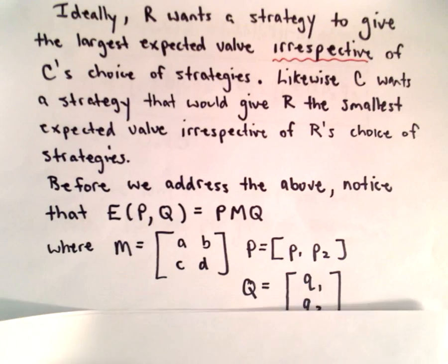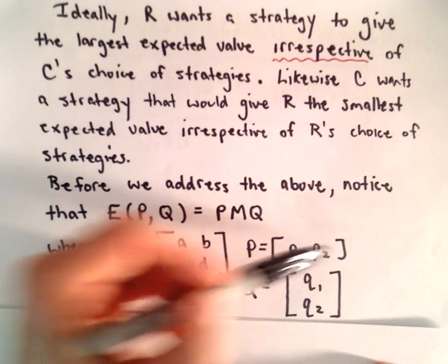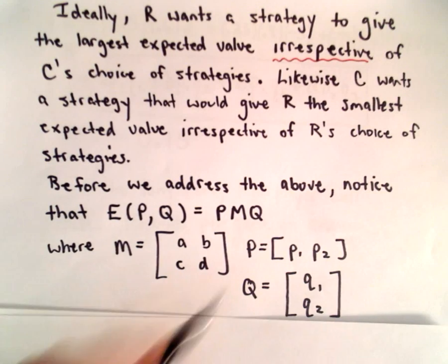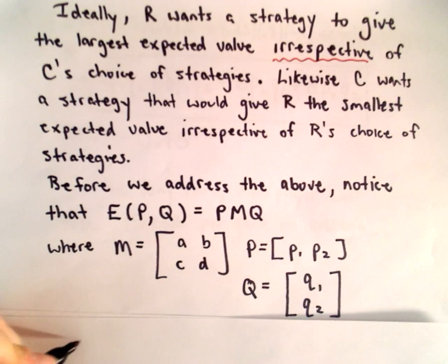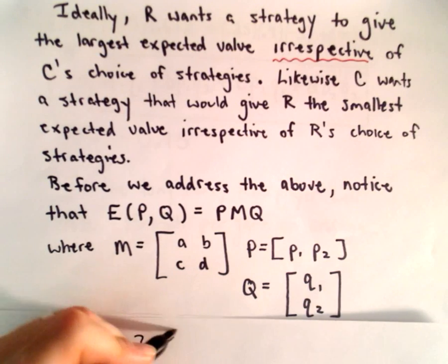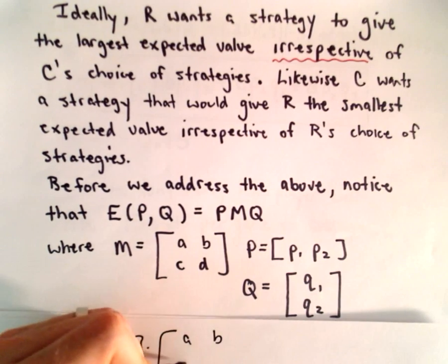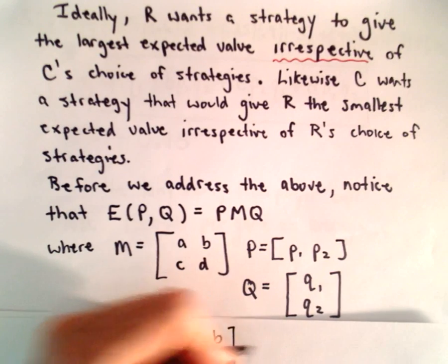And again, that's the reason for using a row, for using rows and columns, is so that now the matrix multiplication will all work out. So we've got P1 and P2. We're going to multiply that by the matrix with entries A, B, C, D.